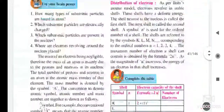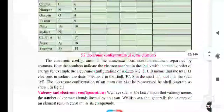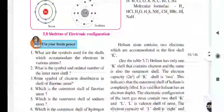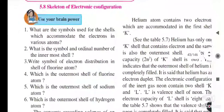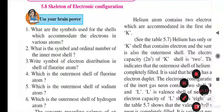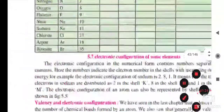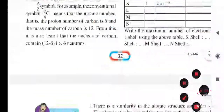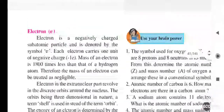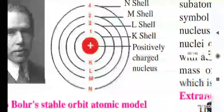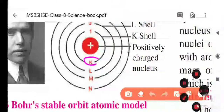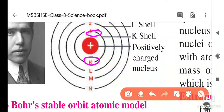The second question: what is the symbol and ordinal number of the innermost shell? The innermost shell is the K shell, and its ordinal number is one. K shell is the innermost shell and its number is one.